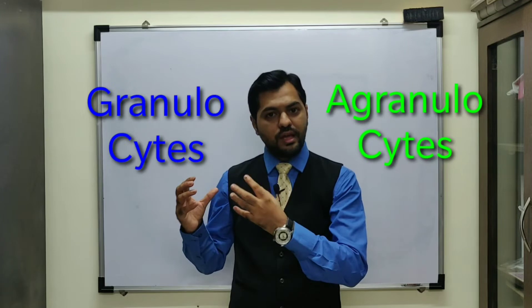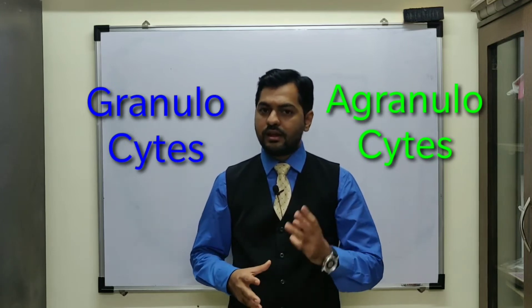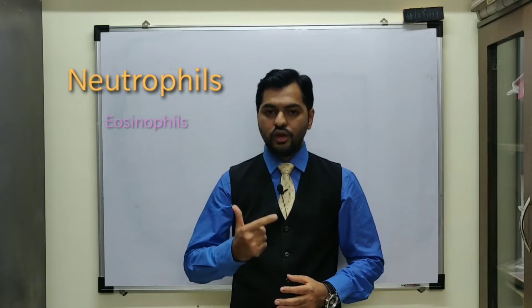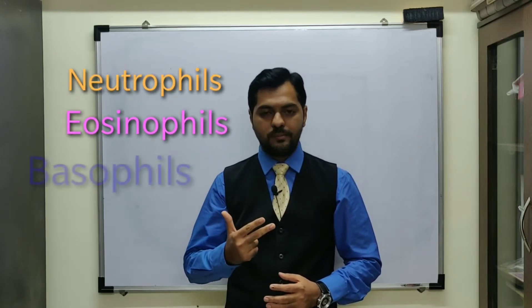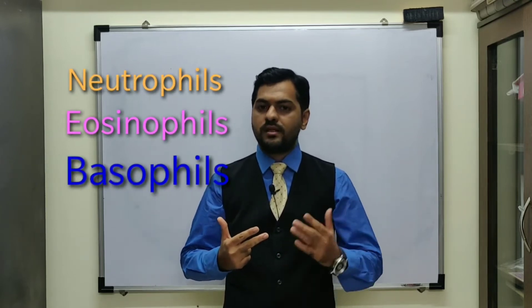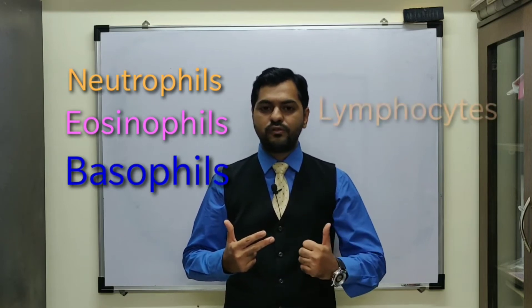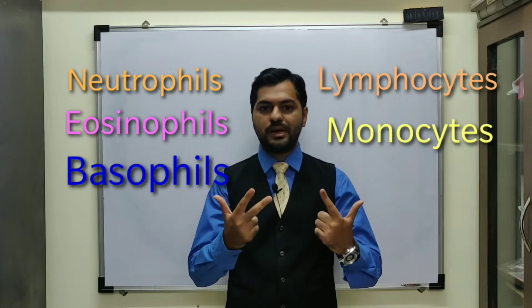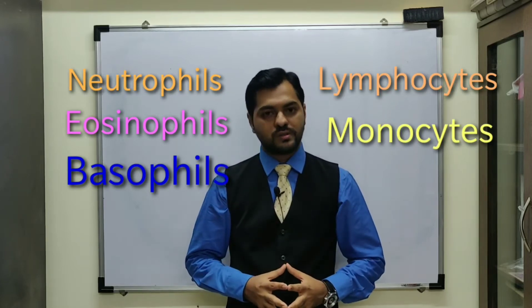In the granulocytes category there are three examples: neutrophils, eosinophils, and basophils. In agranulocytes there are mainly two types of WBCs: lymphocytes and monocytes. So these are the five major types of WBCs that we are going to discuss.